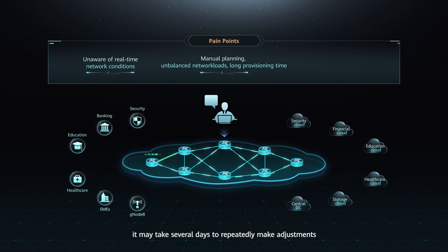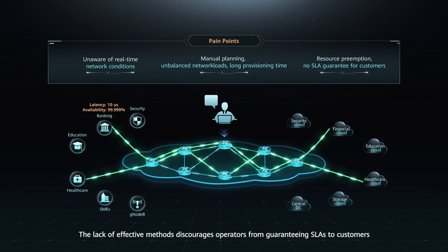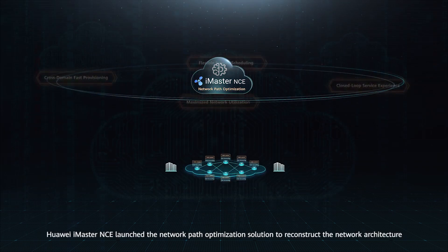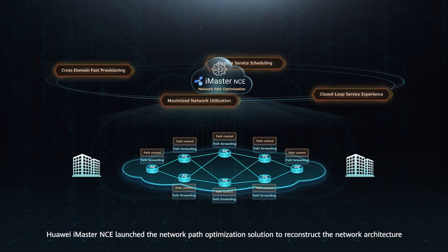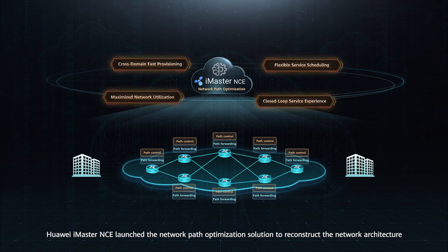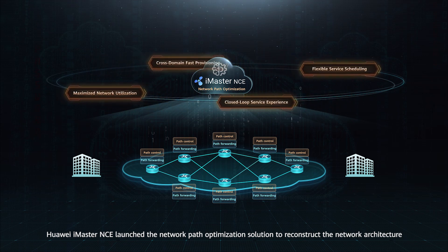On top of that, it may take several days to repeatedly make adjustments. The lack of effective methods discourages operators from guaranteeing SLAs to customers. To address these issues, Huawei iMaster NCE launched the Network Path Optimization Solution to reconstruct the network architecture.